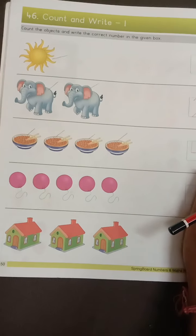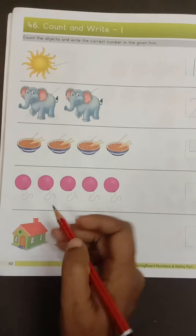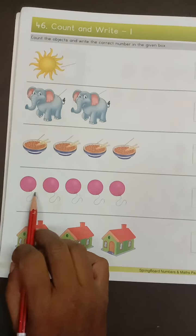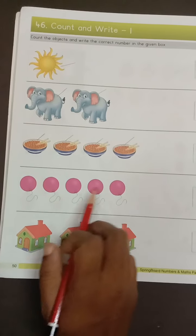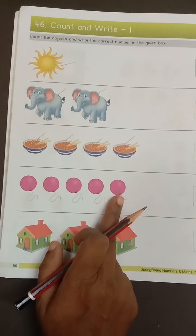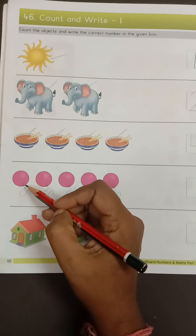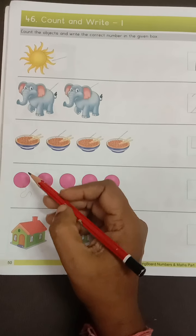Okay kids, next one. So these are the balloons. So how many balloons are there? So count with me. You have to do it slowly slowly like I am doing slowly slowly.